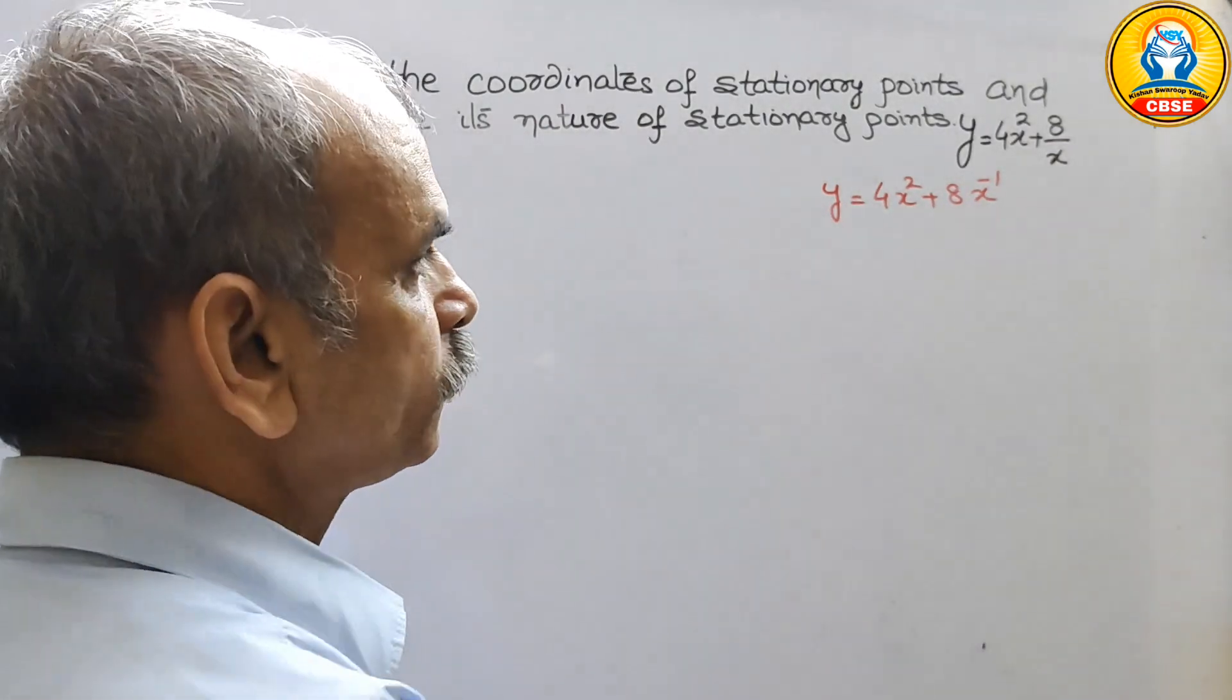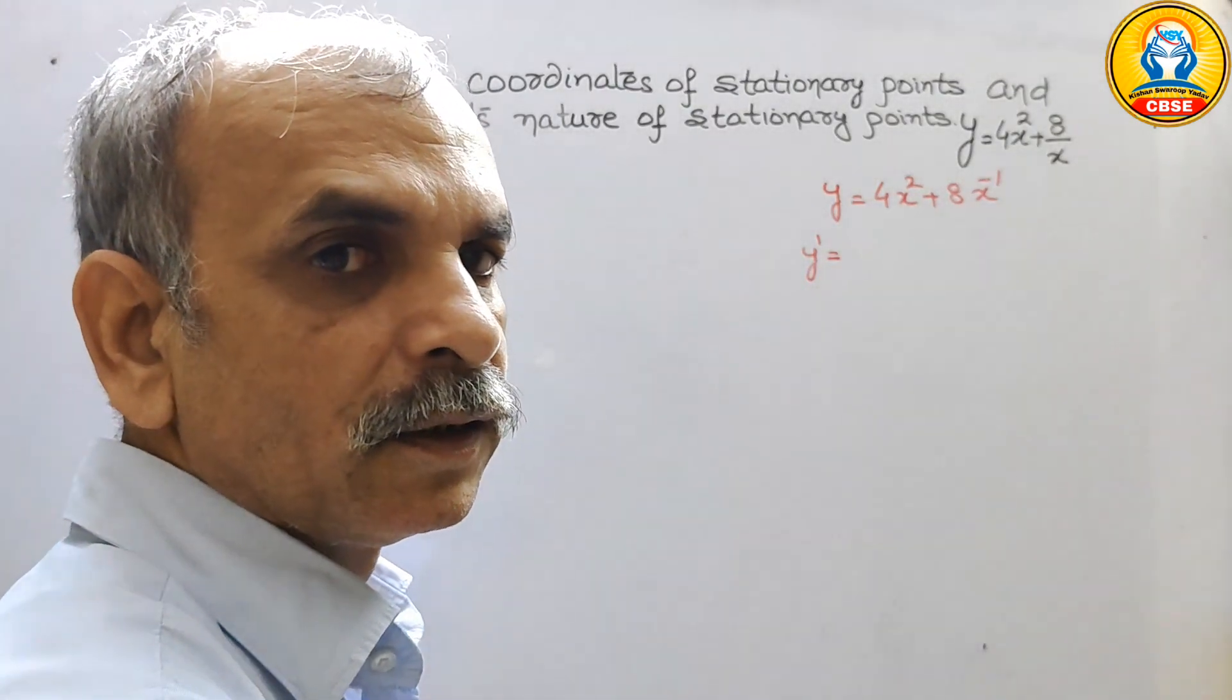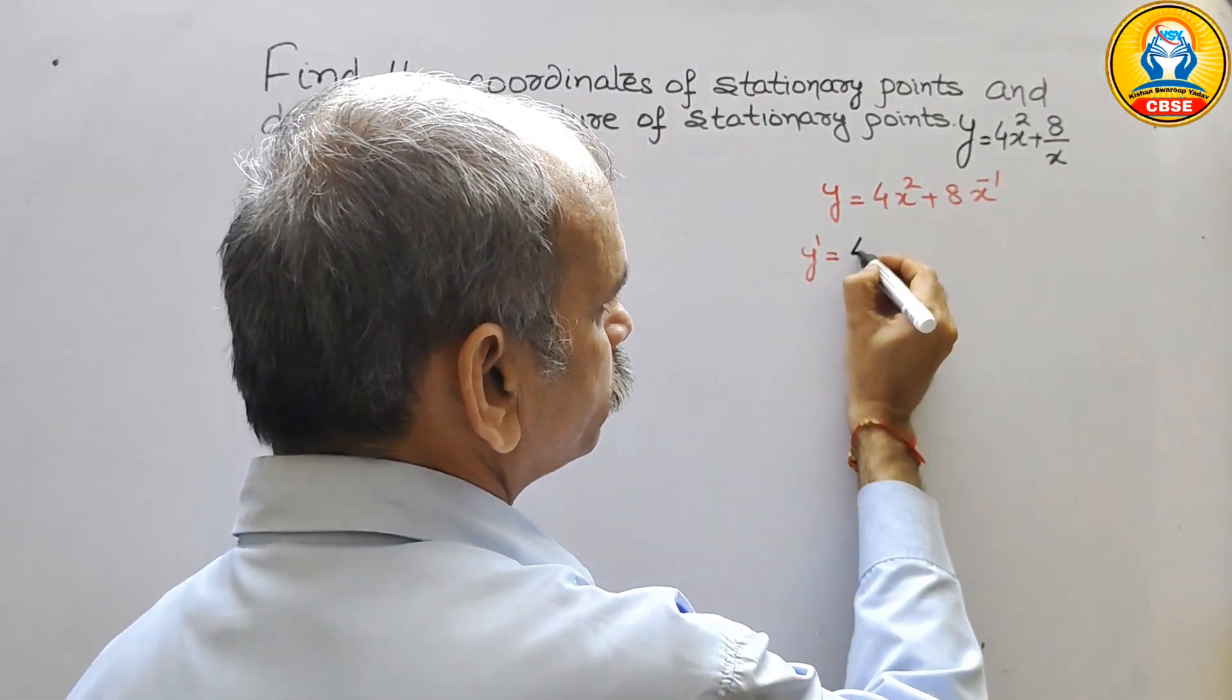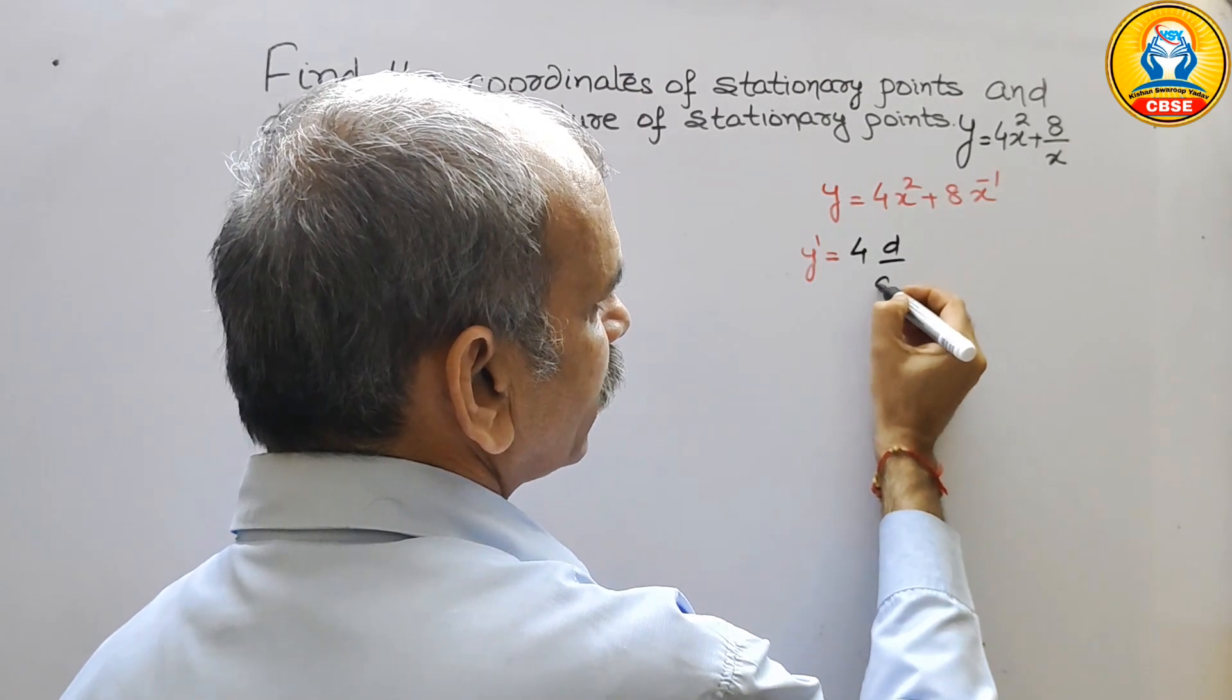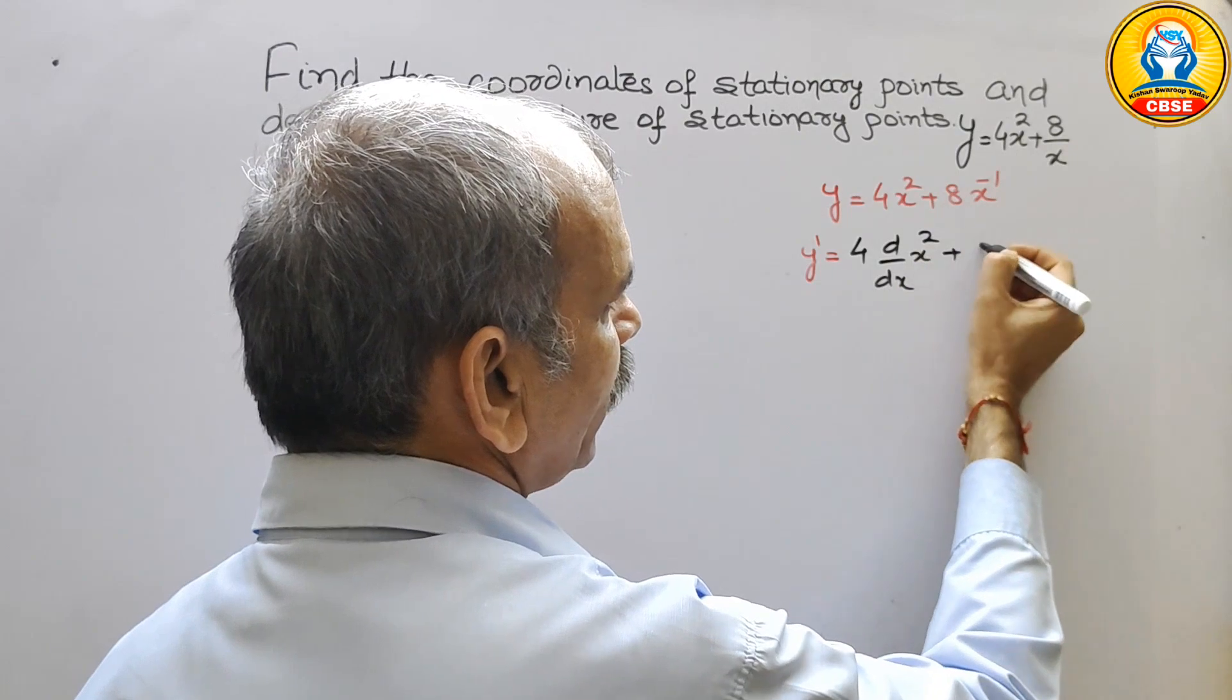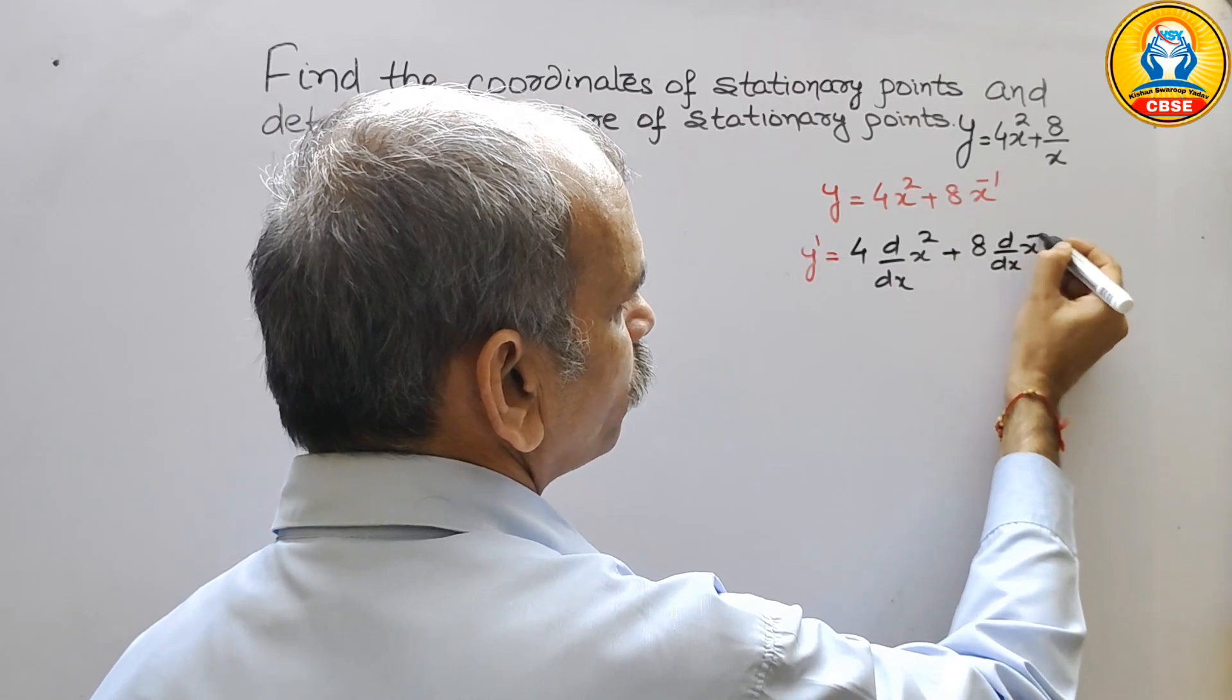Now differentiate it. So we will get y dash is equal to what? We will write 4 d by dx of x square plus 8 d by dx of x to the power of minus 1.